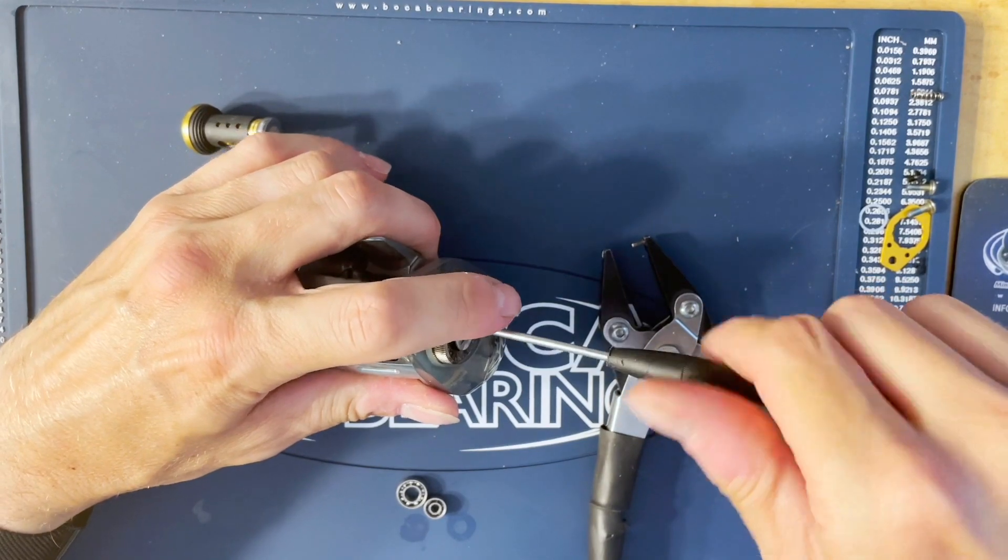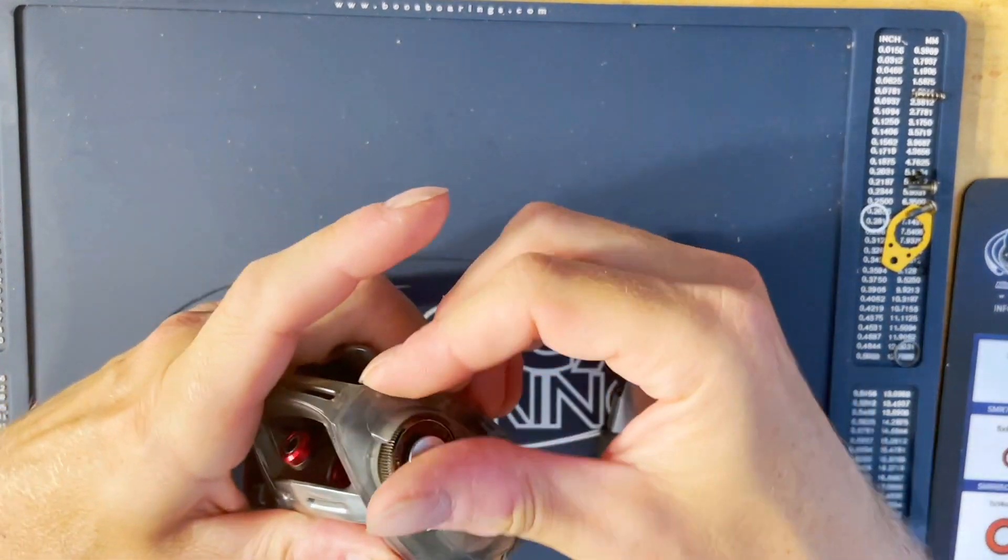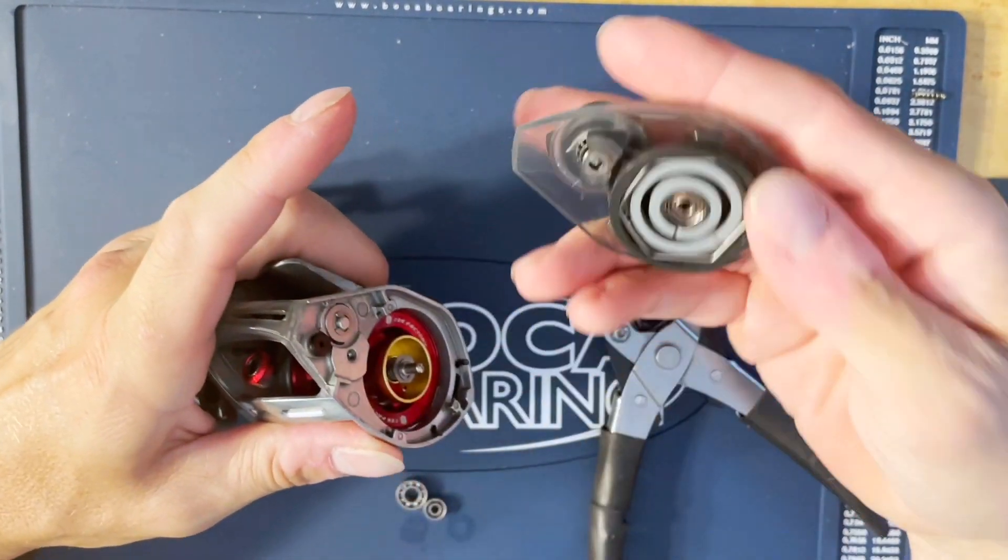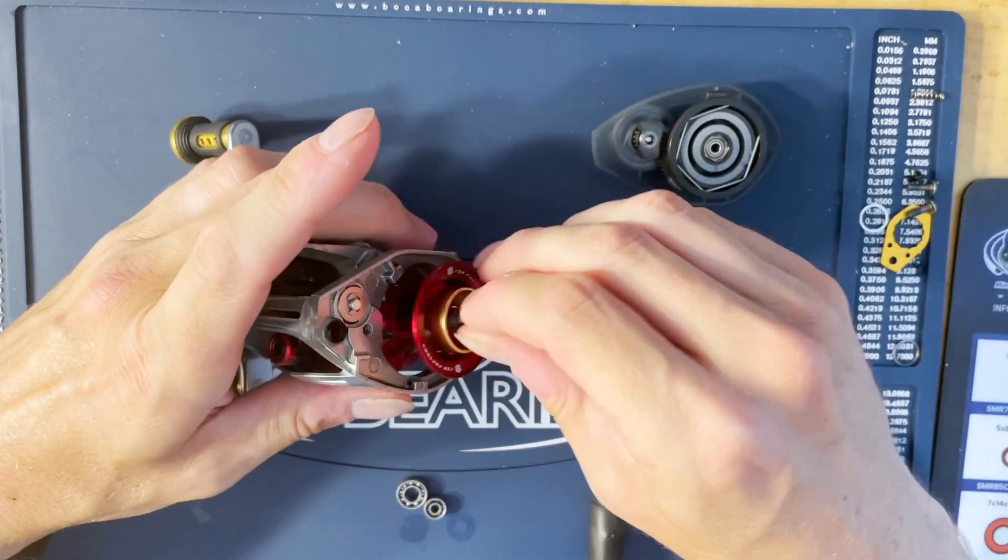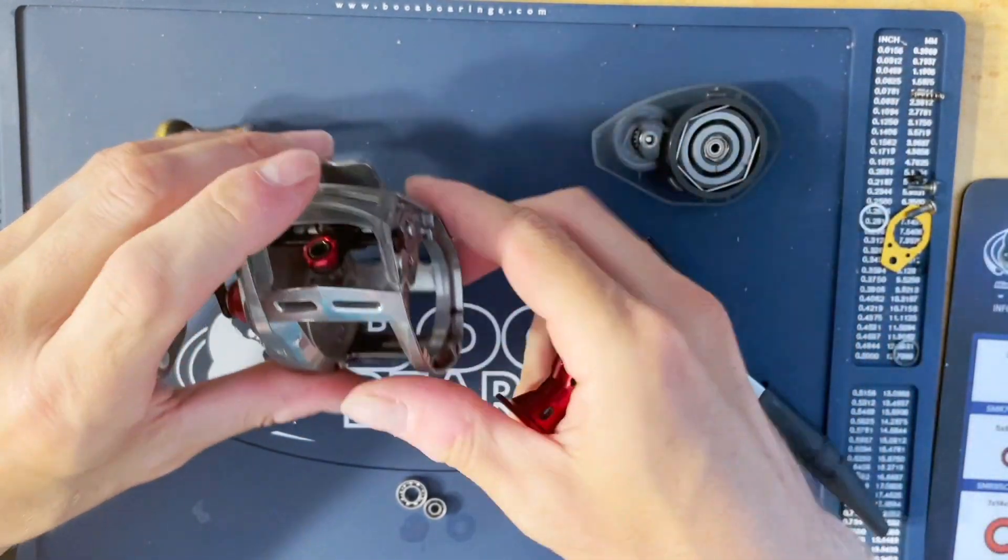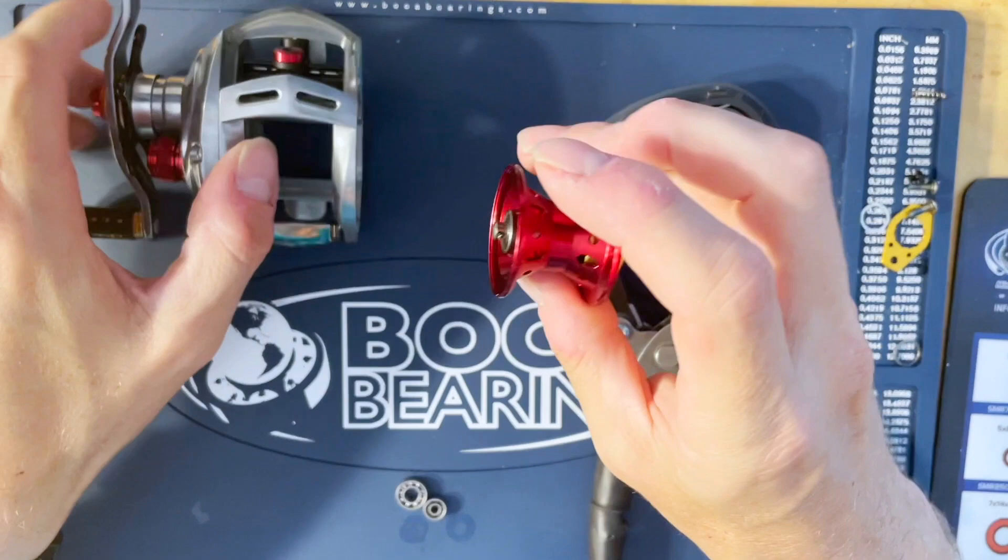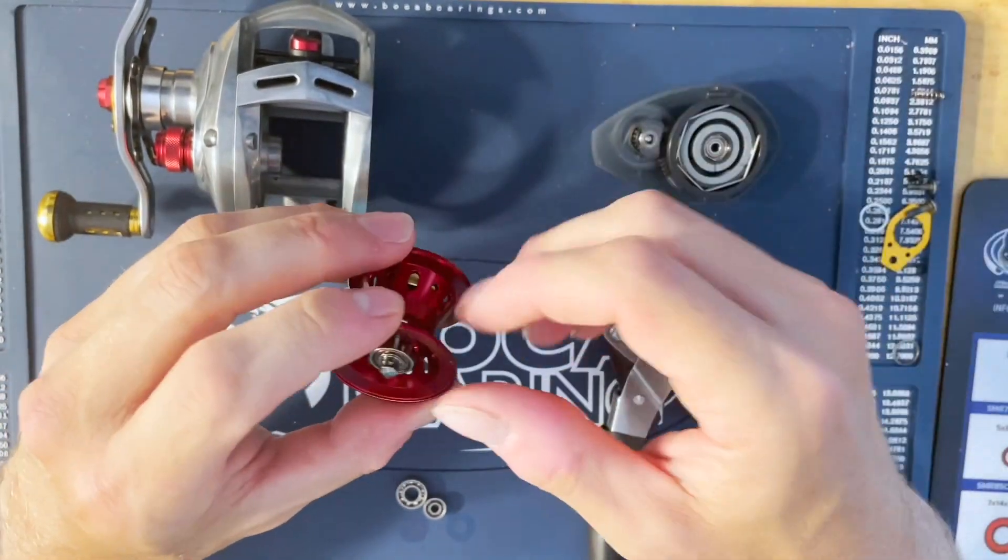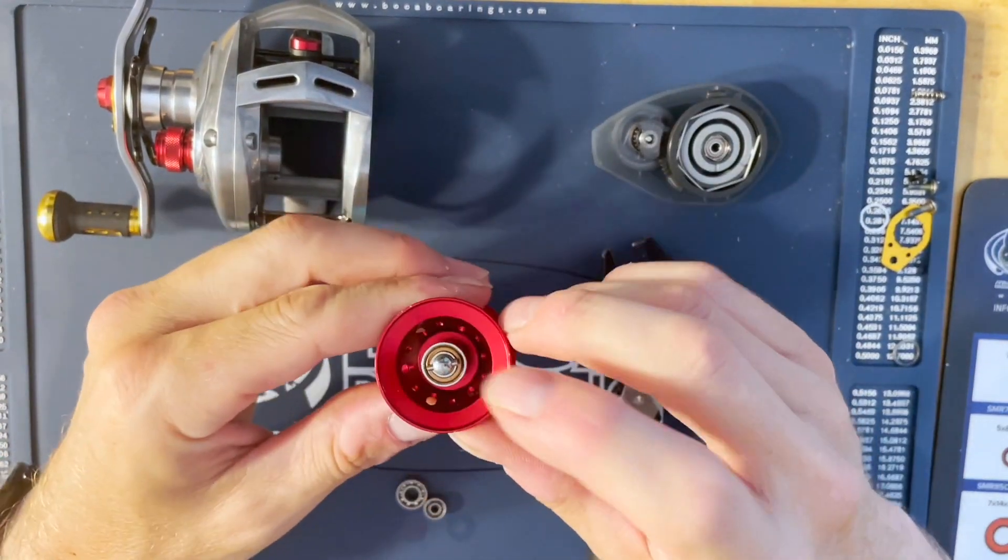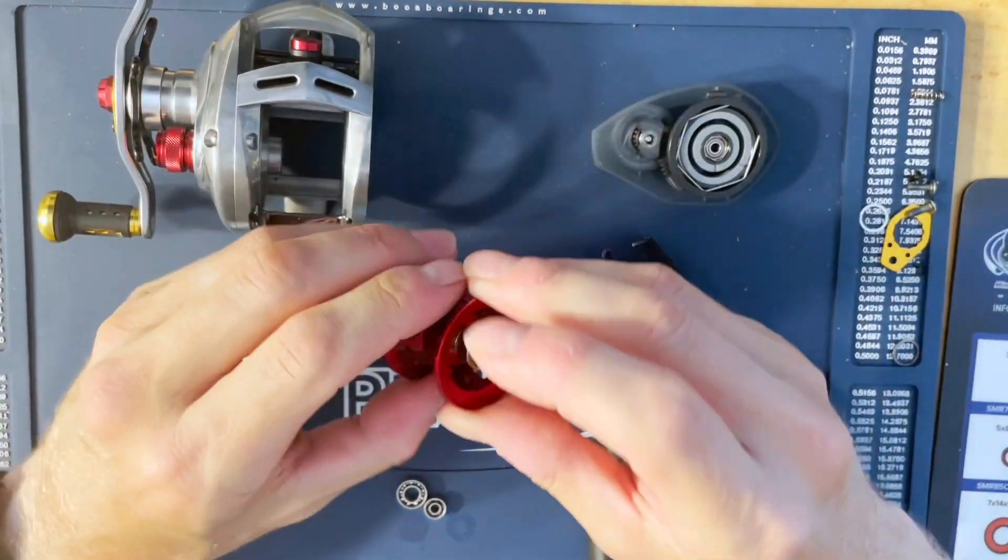Pretty incredible little reel. It's kind of a power finesse reel back in the day, not crazy finesse like we're talking about right now with all the BFS stuff, but it would throw some lighter stuff pretty well.